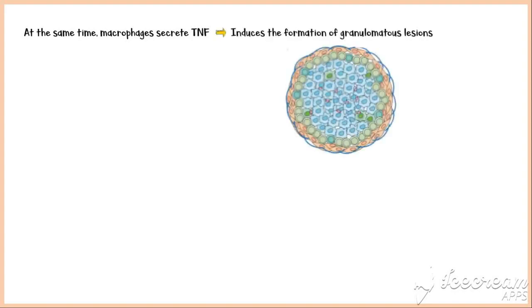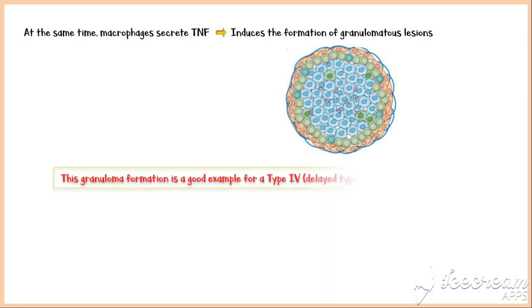At the same time, these macrophages secrete tumor necrosis factor, which induces the formation of granulomatous lesions, with subsequent tissue destruction and fibrosis. This granuloma formation in tuberculosis is a good example of a type 4 hypersensitivity reaction.